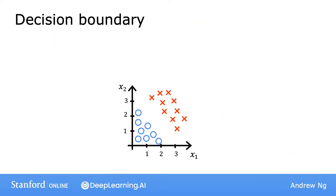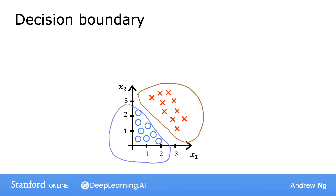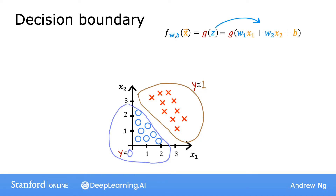I'm going to take an example of a classification problem where you have two features, x1 and x2. Here's a training set where the red crosses denote the positive examples and the blue circles denote negative examples — red crosses correspond to y equals 1, blue circles to y equals 0. The logistic regression model makes predictions using f of x equals g of z, where z is w1·x1 plus w2·x2 plus b. Let's say the parameters are w1 equals 1, w2 equals 1, and b equals negative 3.